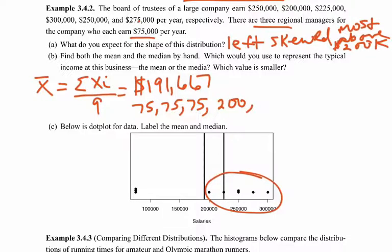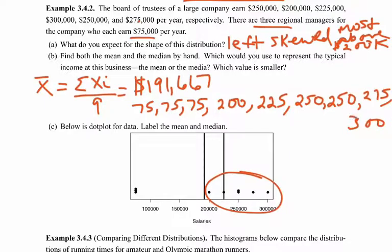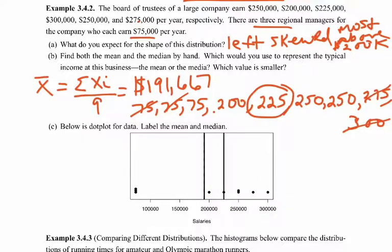Continuing the ordered list: $250,000, $250,000, $275,000, and $300,000 — nine values total. With an odd number of data points, the median is the value directly in the middle with four below and four above it. That middle value is $225,000, so the median salary for this data set is $225,000. For an even data set, you would take the two middle numbers and average them.